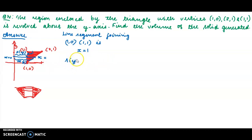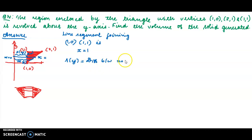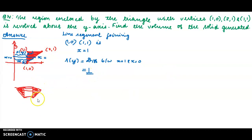Small r of y is equal to the difference between x equal to 1 and the y-axis x equal to 0, which is equal to 1. So the inner radius r(y) equals 1. Now let's find the equation of the line segment joining (1,0) and (2,1), which gives us the capital R of y.